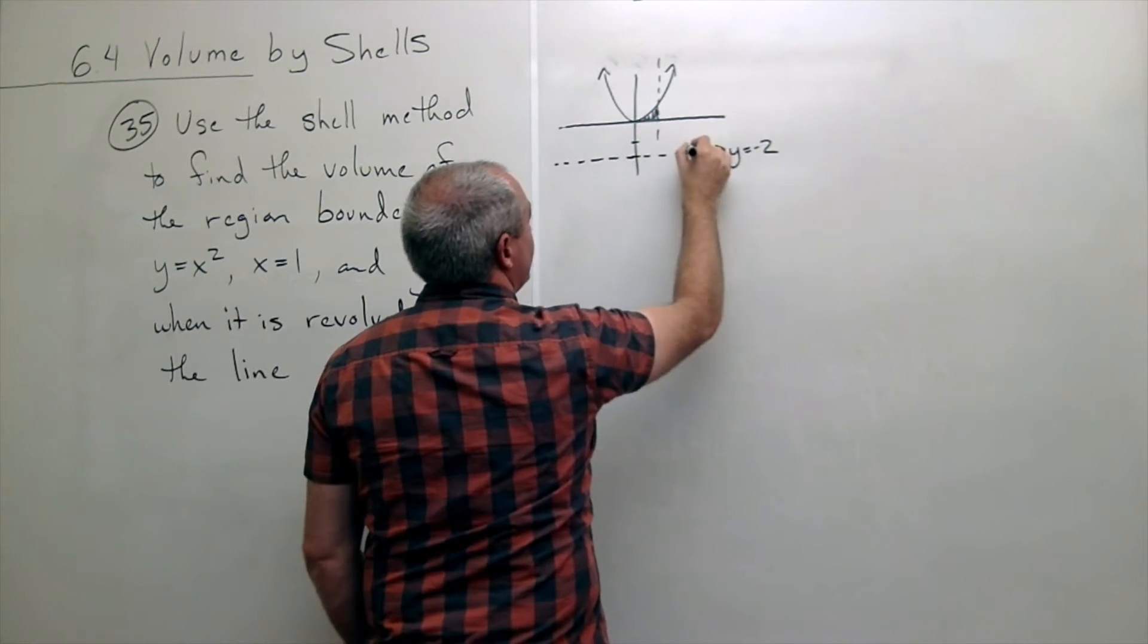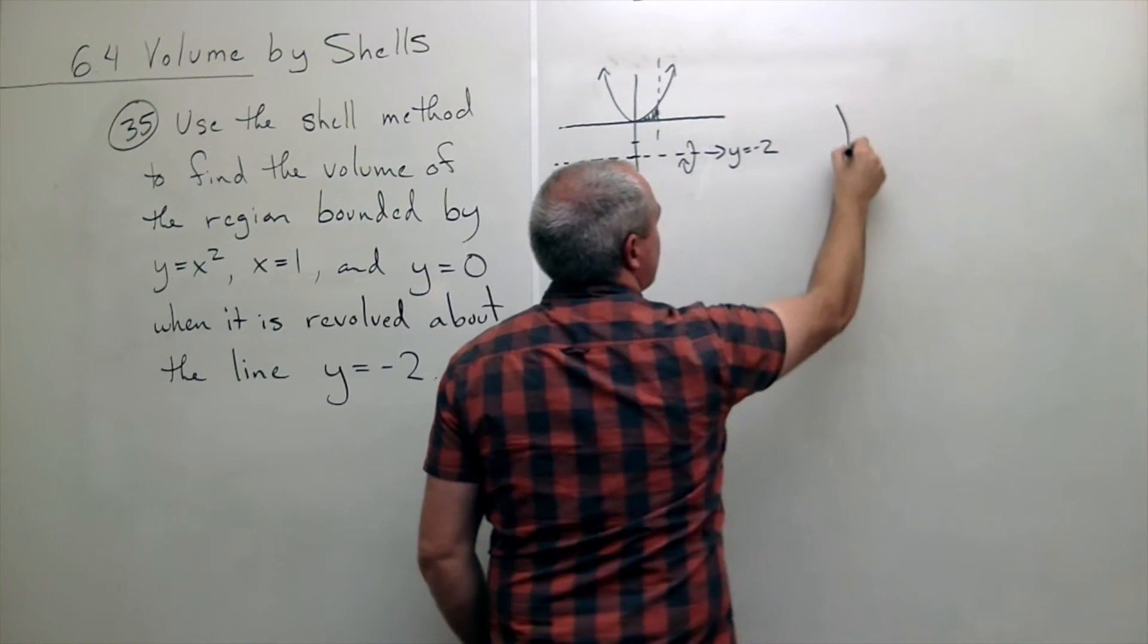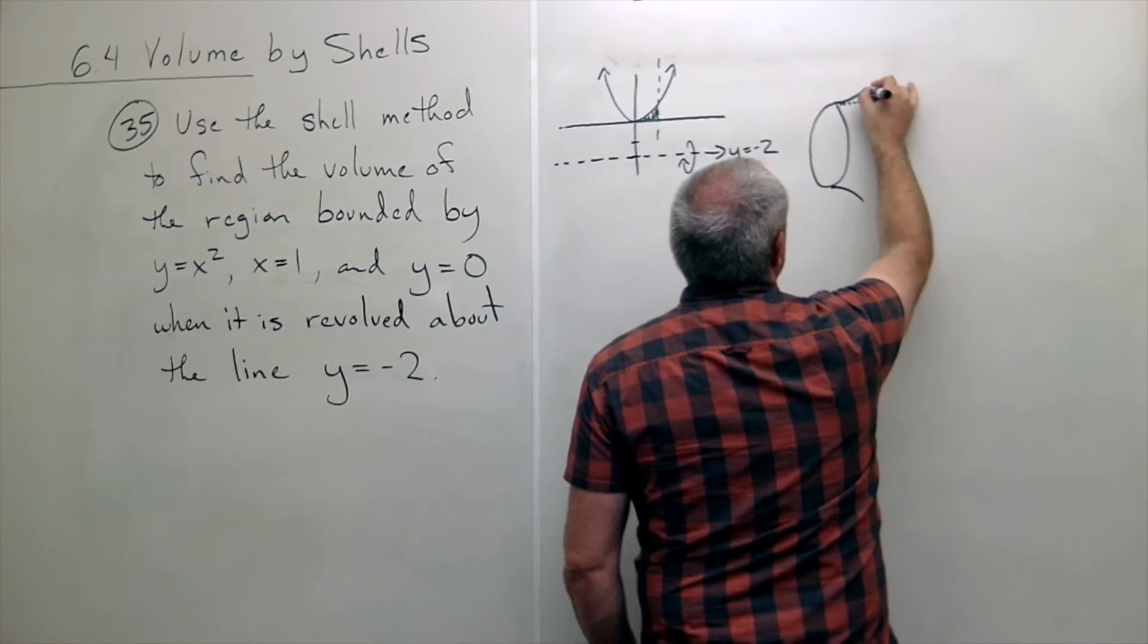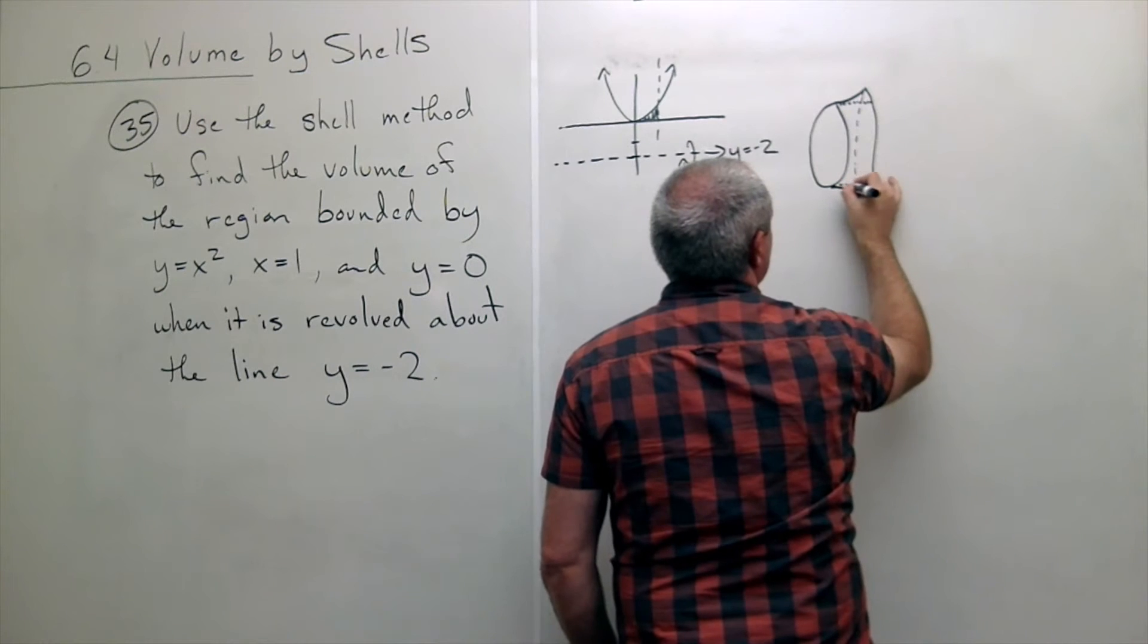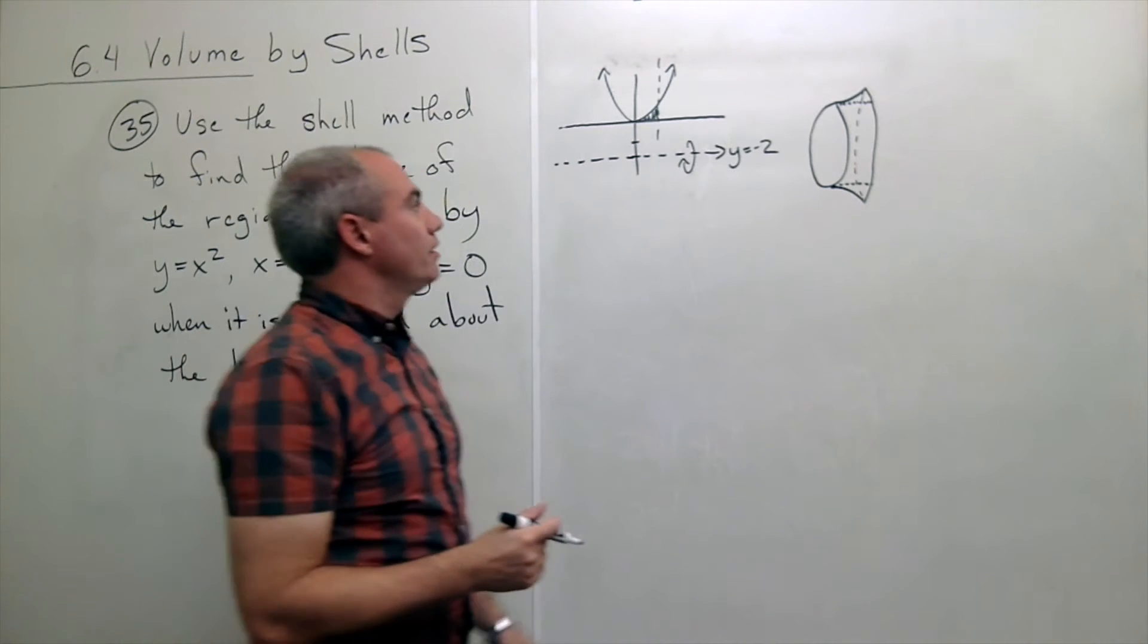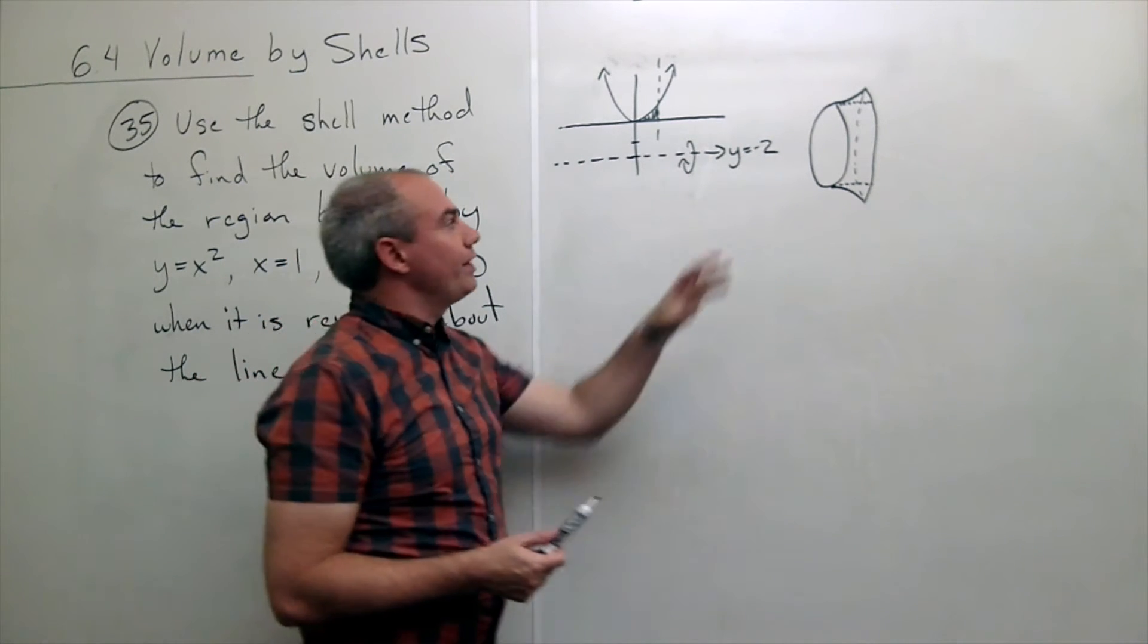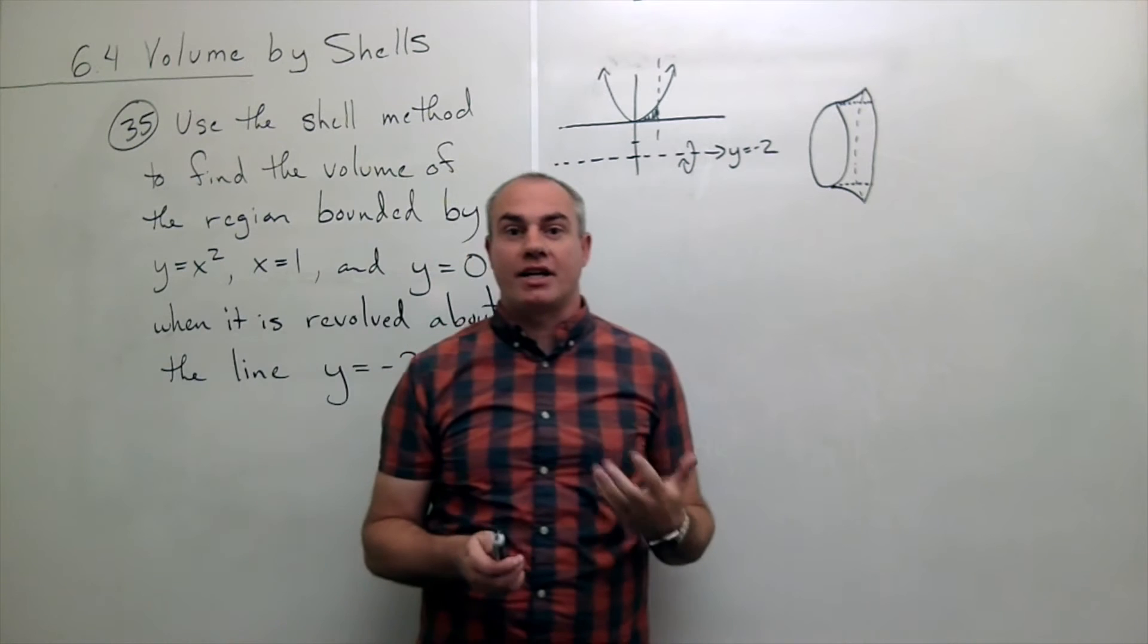We're going to take that region and spin it around that line. When I do, I'll get something that looks sort of like this, where there's a hole through the middle of this object. It's a fairly thin semi-circular object. So we get a feel for what this thing looks like. Now how do we find the volume? How do we set up the integral that's going to get the job done for us?